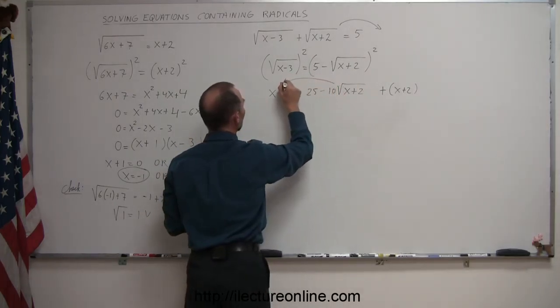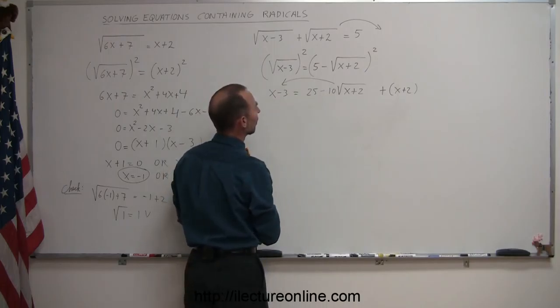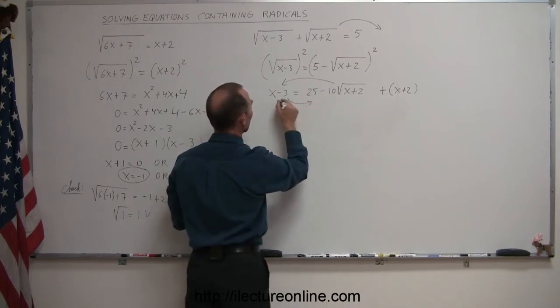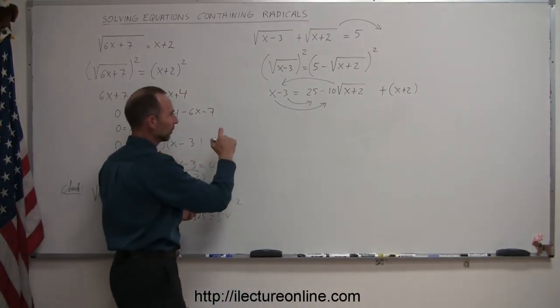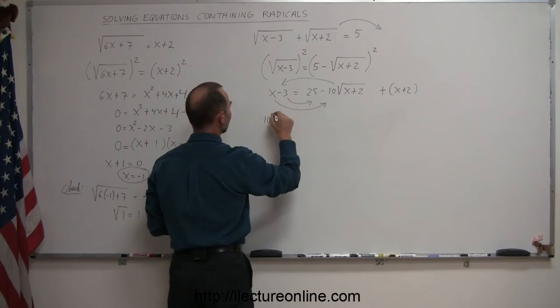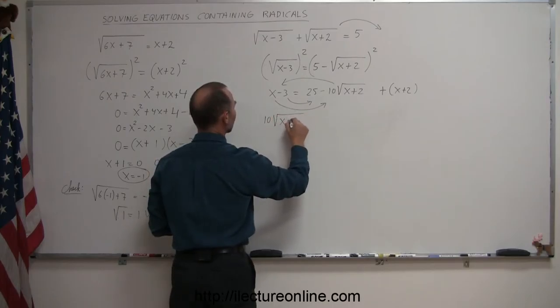So moving this to the left, that becomes a positive 10 times the square root of x plus 2. Then I move this to the right and I move that to the right. And let's see what we get.